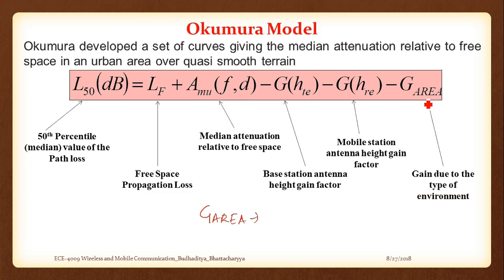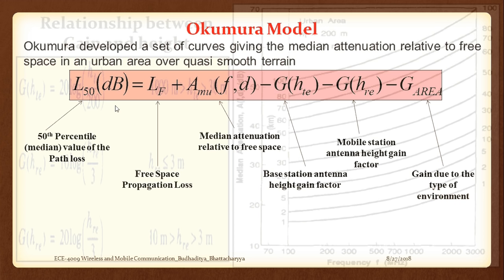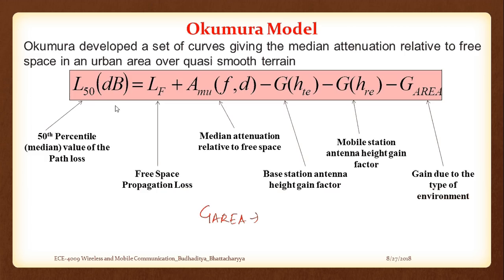G(Area) is obtained from the graph itself. AMu(f,d) is also from the graph. LF is calculated from the formula. G(HTE) and G(HRE) are derived from equations. Note down the main equation: L50(dB) = LF + AMu(f,d) - G(HTE) - G(HRE) - G(Area). G(HTE) and G(HRE) are not antenna gains but height-based factors. Remember to carry this tabulation/graph into your exam.